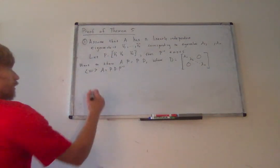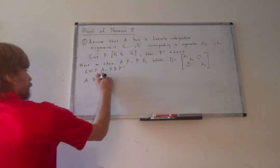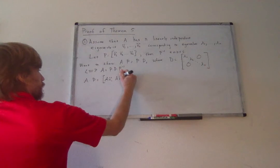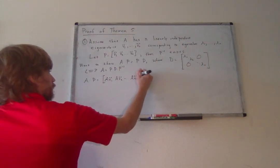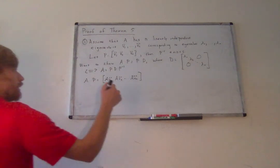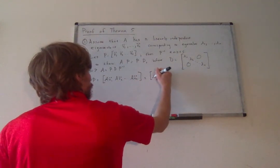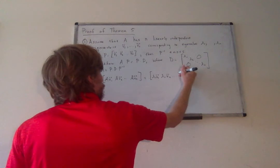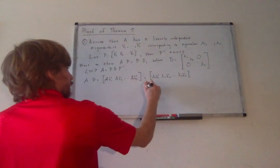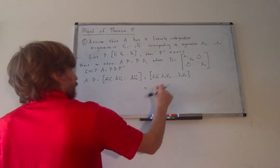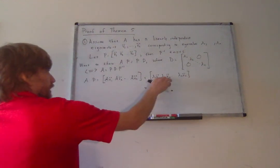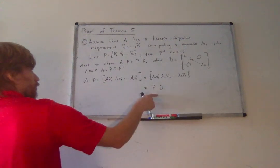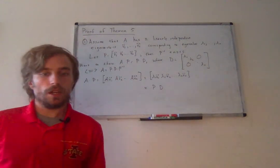This amounts to applying the definition of matrix multiplication. A times P equals [A*v1, A*v2, ..., A*vn] — distributing A through the columns of P. Since each of these is an eigenvector corresponding to the ordered eigenvalues, I can rewrite this as [lambda_1*v1, lambda_2*v2, ..., lambda_n*vn], which equals P times D by factoring out D. So this relation implies A equals P*D*P inverse, and I've shown one part of the proof.